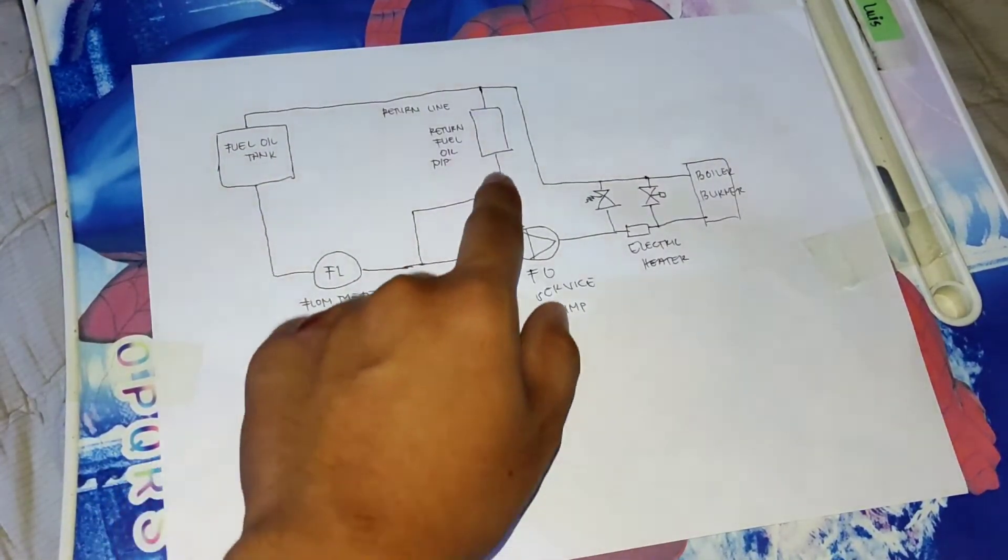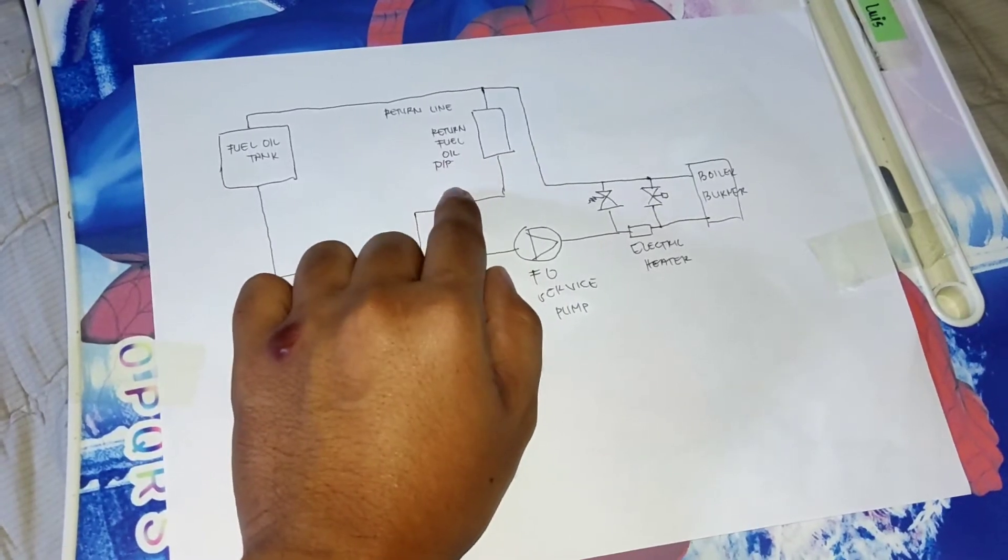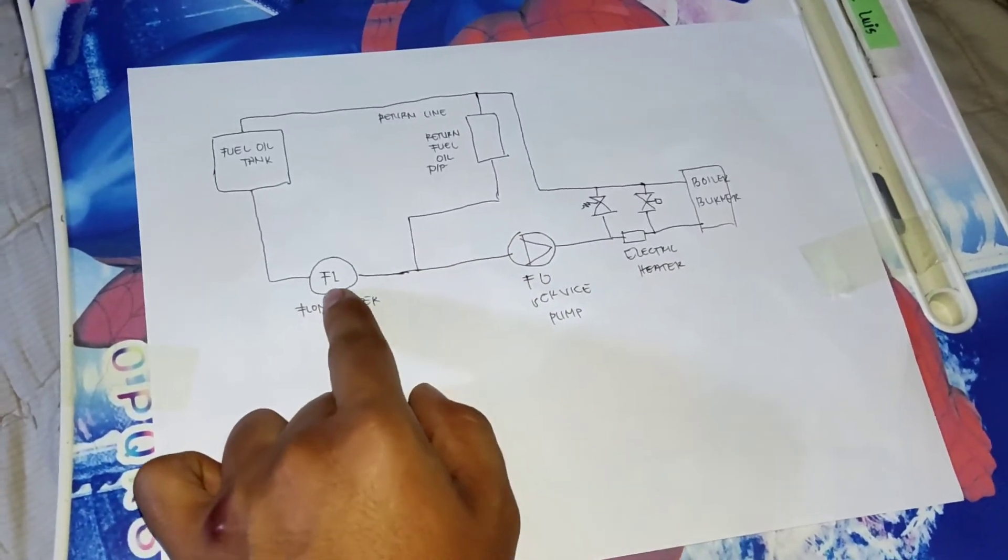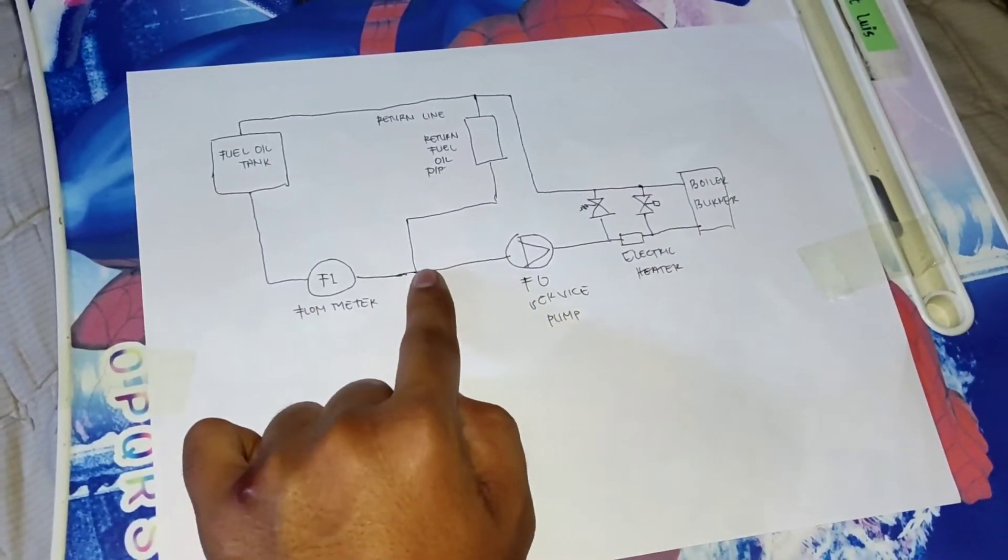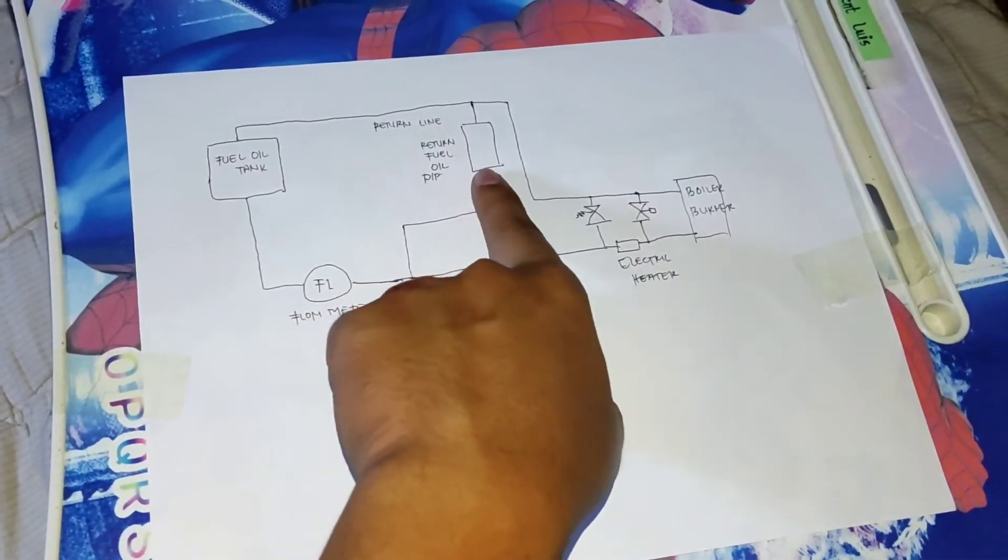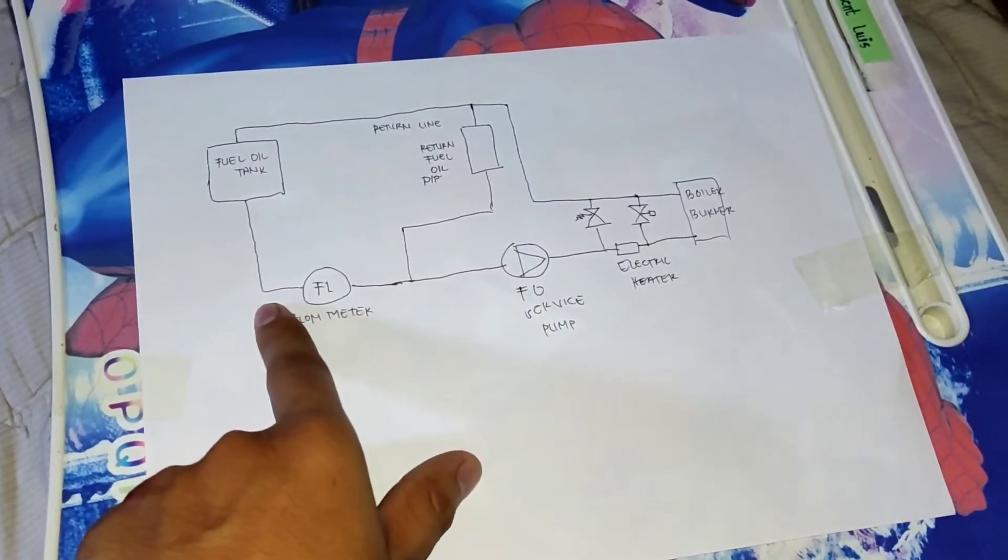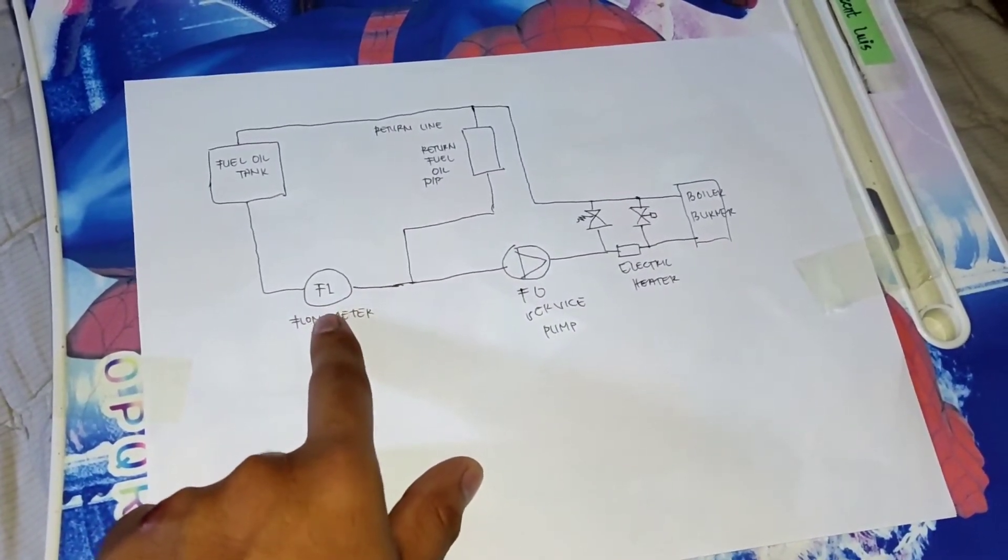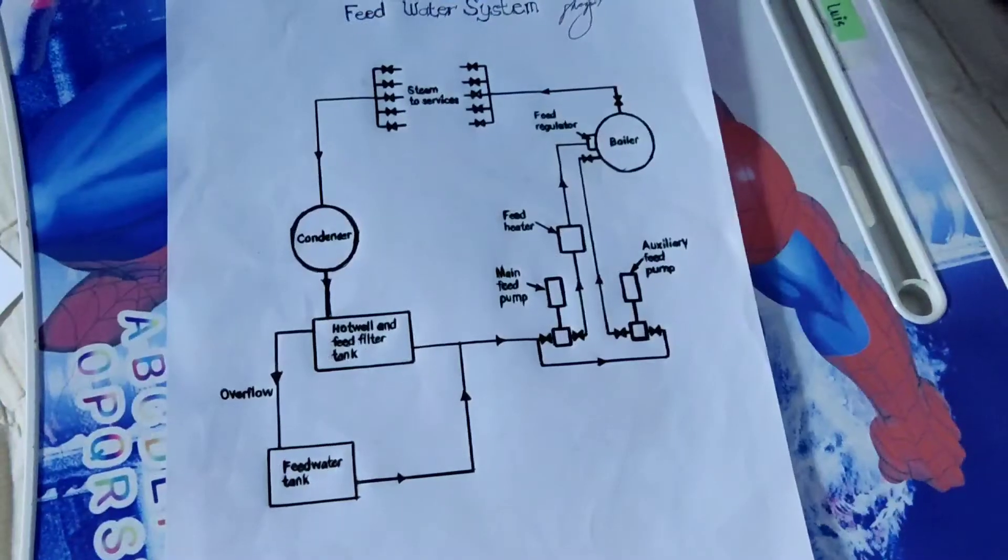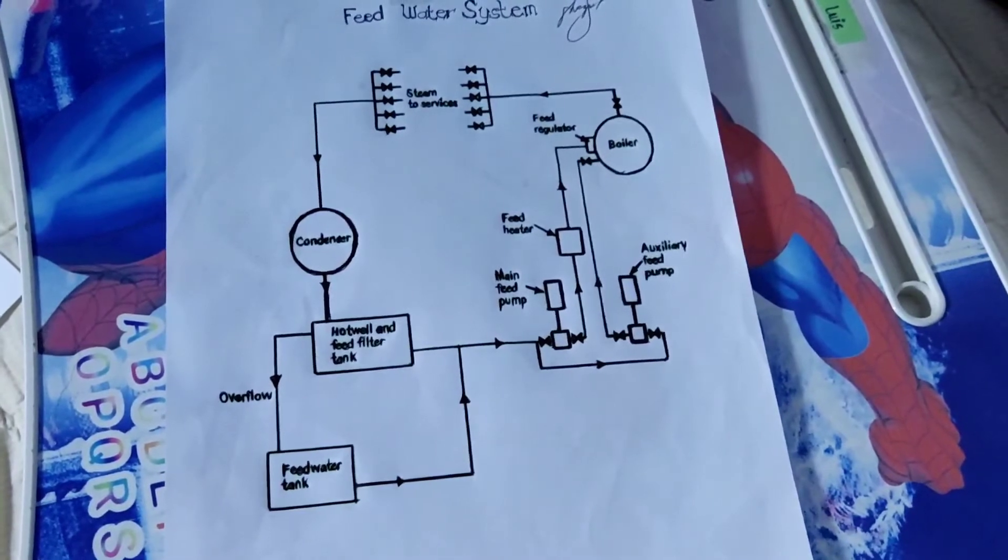And we have here the return fuel oil pipe. So it is after the flow meter so that the returning fuel will not be measured in the fuel oil meter. And now let's move on to the feed water system.